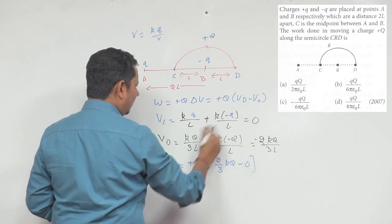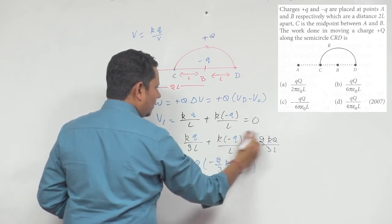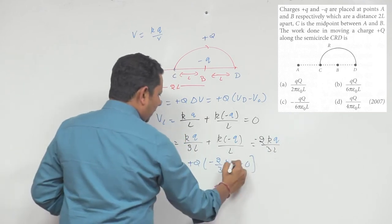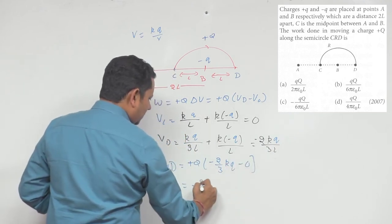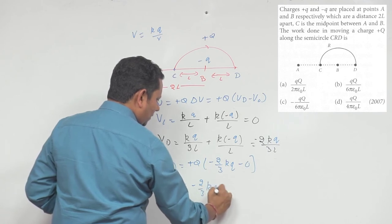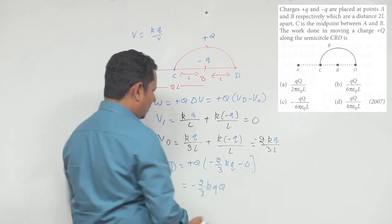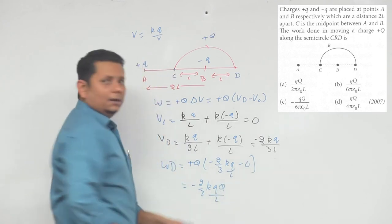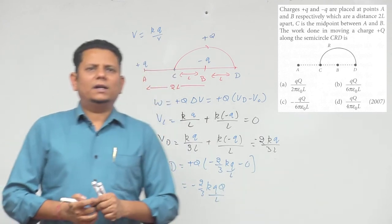So here everything will become small q. Let's make it small q. So it became small q. So your final value is minus 2/3 KQq divided by L. So that will be your final answer.